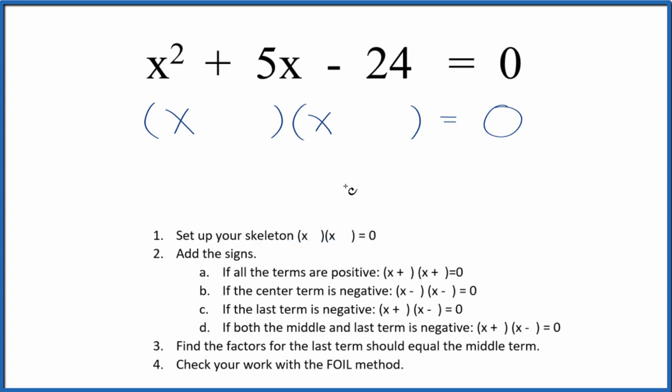Next, we're going to add the signs into our skeleton equation. We have a positive and then a negative here in our equation. If the last term is negative, we're going to put a positive and a negative in our skeleton equation. So we've got that.